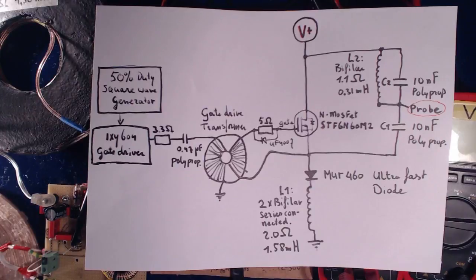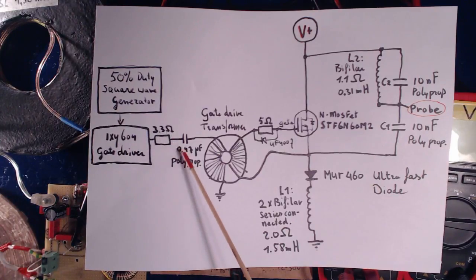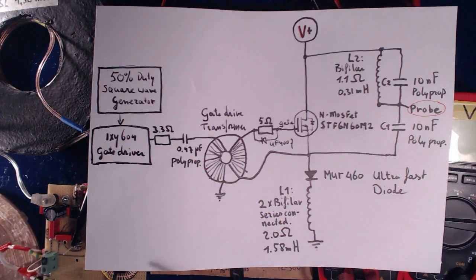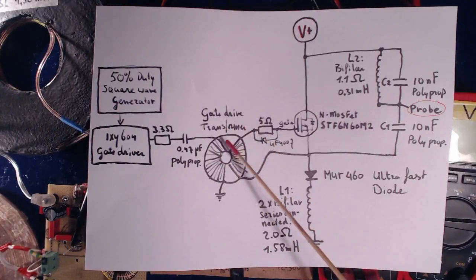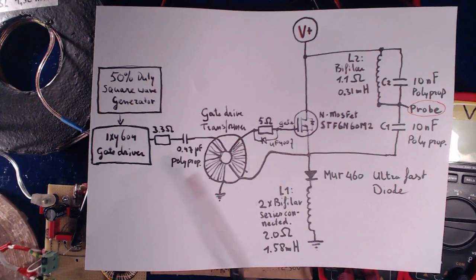This is the basic schematic. I've got a 50% duty cycle square wave generator that's feeding the XC604 gate driver with a signal. It has a separate power supply. The output of the gate driver goes to a 3.3 ohms and 0.47 microfarad capacitor. All the capacitors that I'm using are polypropylene because they are capable of dealing with these high frequencies. Then the signal goes to the primary of the gate drive transformer to ground. The gate drive transformer also is capable of dealing with these high frequencies.